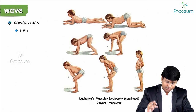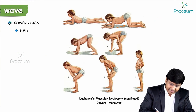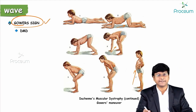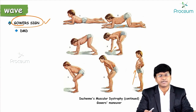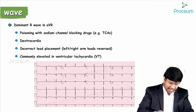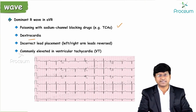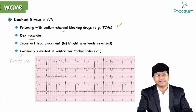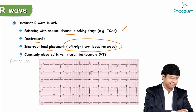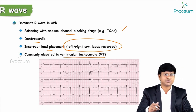The Gower sign: the individual cannot get up normally and has to climb on himself to rise — that is the Gower sign. Conditions causing dominant R wave in AVR: dextrocardia, poisoning with sodium channel blocking agents (tricyclic antidepressants), incorrect lead placement (right arm and left arm lead reversal), and broad complex tachycardias like ventricular tachycardia.